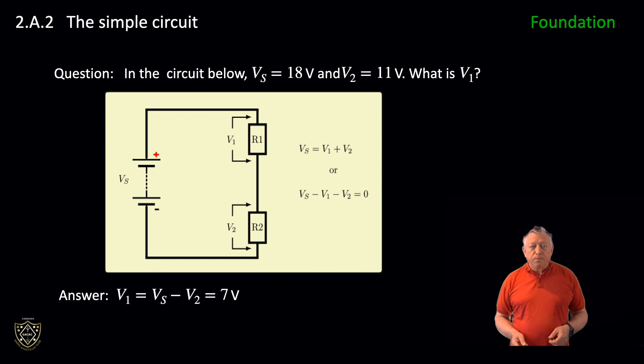Let's do a question. In the graphic shown, Vs equals 18 volts and V2 equals 11 volts. What is V1? Vs is the source voltage. Well, V1 equals Vs minus V2, which is 7 volts. So the sum of the voltages across a number of resistors in series equals the supply voltage.